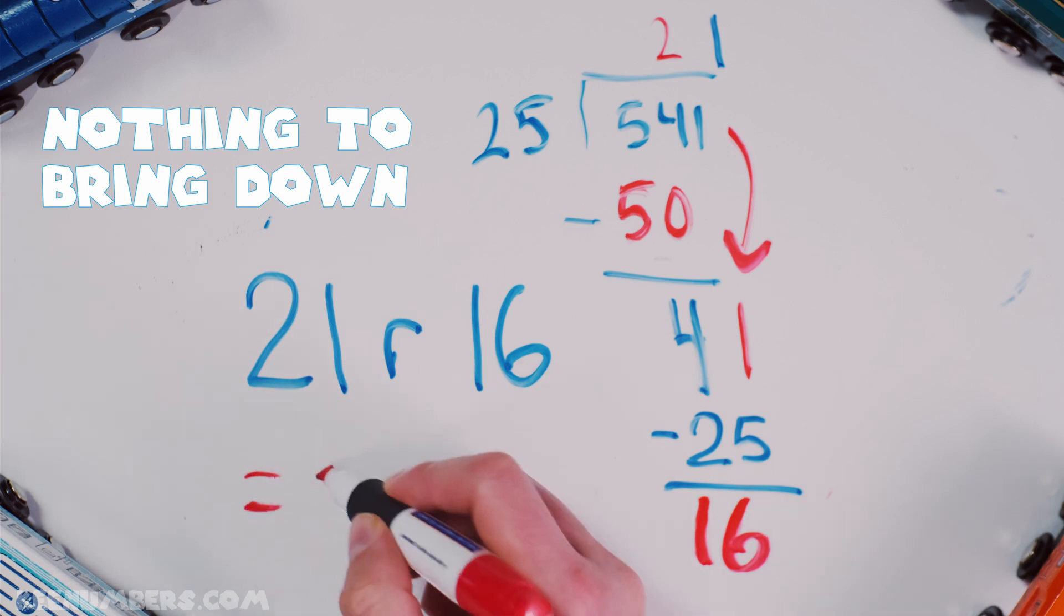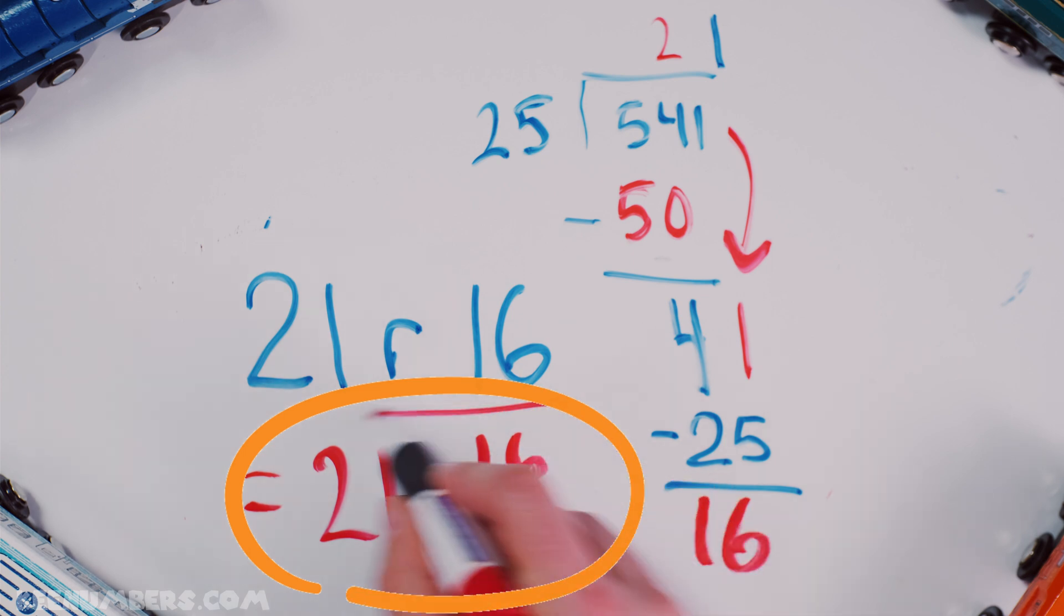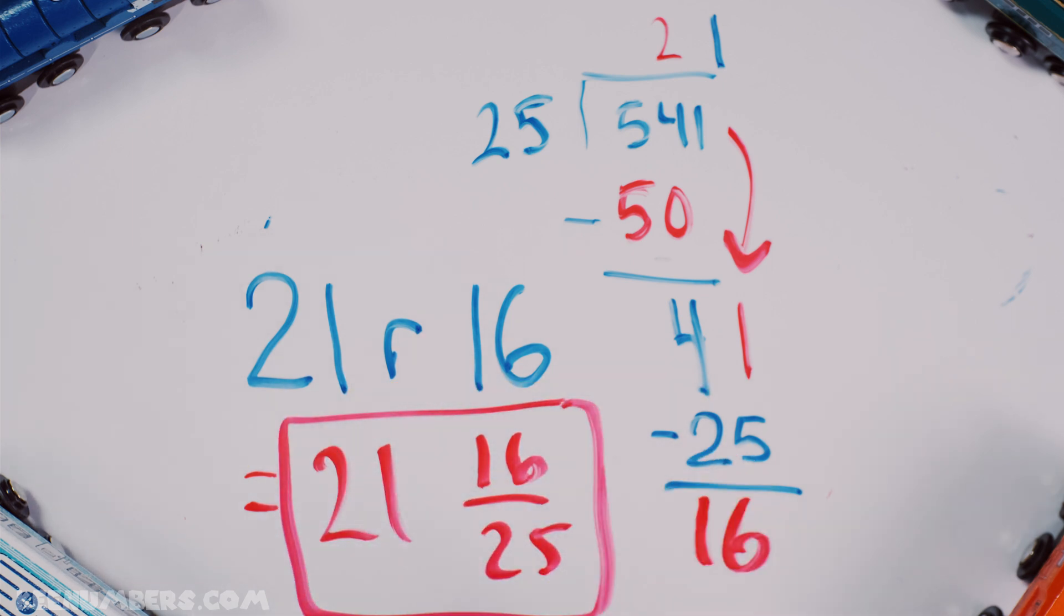Which is the same thing as 21 and 16 over 25. That's the mixed number.